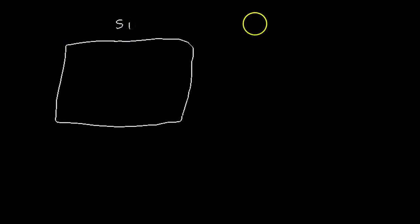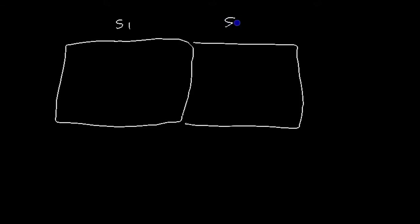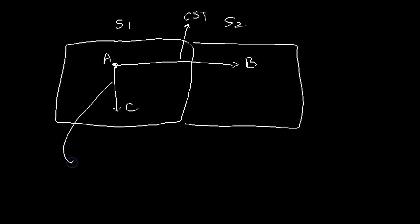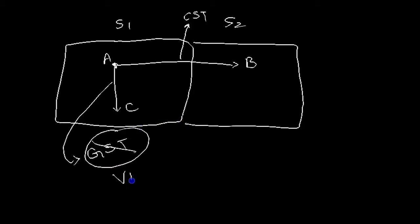Suppose this is State 1 and this is State 2. There is a person A. He sells goods to B in another state — the tax applicable there will be CST. But if the same person A sells goods to C within the state, the tax applicable will be GST, which has now been replaced by VAT.